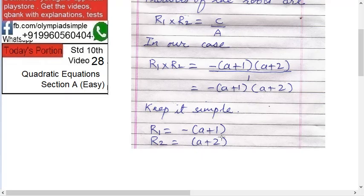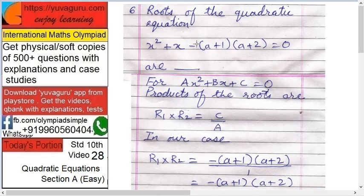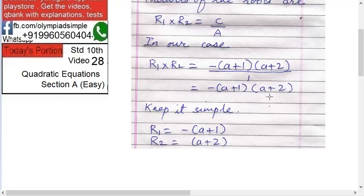So roots would be minus (a plus 1) and (a plus 2), or (a plus 1) and minus (a plus 2). Minus can go to this or to this, but to only one. This is the easiest way to find the roots.